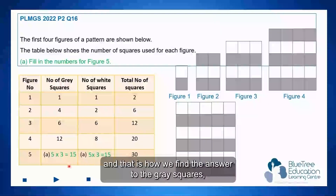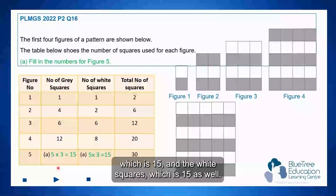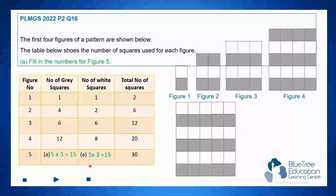And this is how we find the answer for figure 5: the grey squares total 15, and the white squares are 15 as well.